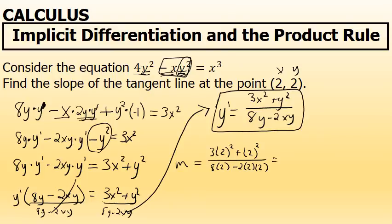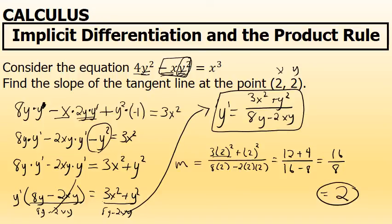2 squared is 4, times 3 is 12, plus 2 squared is 4, over 8 times 2 is 16 minus 2 times 2 is 4 times 2 is 8. 12 plus 4 is 16, and 16 minus 8 is 8. The slope of the tangent line to the equation 4y² minus xy² equals x³ at the point (2, 2) is positive 16 over 8, which is positive 2.